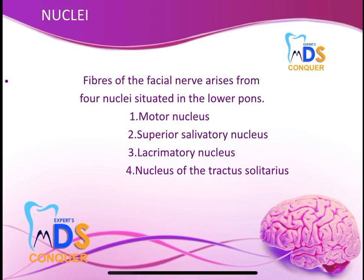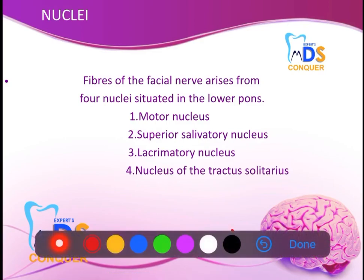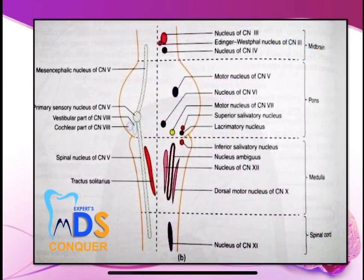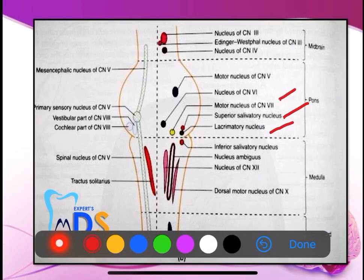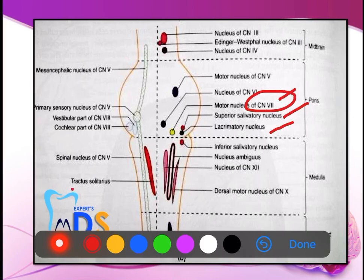Coming to the nuclei, which are very, very important for this facial nerve — keep the headings. These are the four important nuclei with respect to the facial nerve. You can draw a small diagram here. The nuclei include: the motor nucleus of cranial nerve 7, the superior salivatory nucleus, the lacrimatory nucleus, and the nucleus tractus solitarius. You can draw this diagram from Chaurasia — it's very important. In the pons, those nuclei are located.